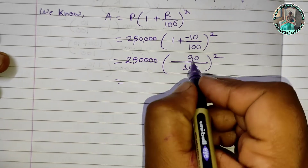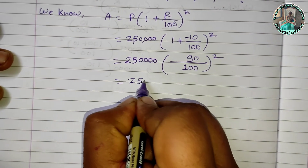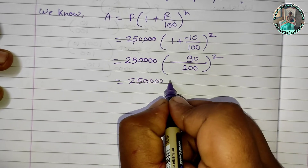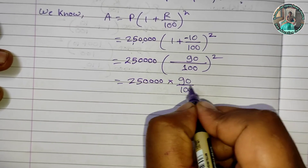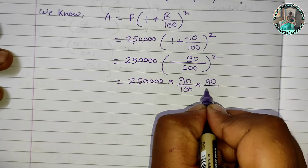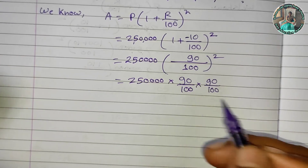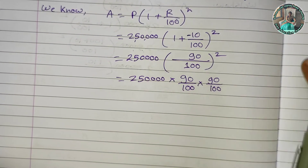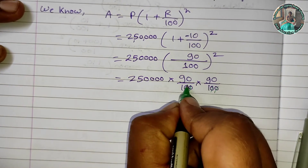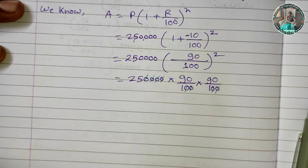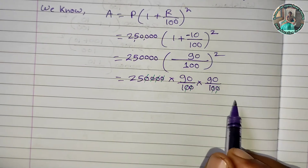Now we have to square it: 90 squared over 100 squared. We can simplify: 2,50,000 becomes 25 (cancelling zeros), then multiply 25 × 90 × 90.